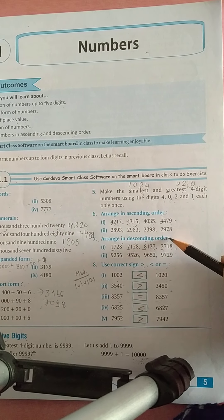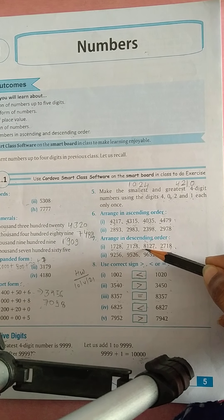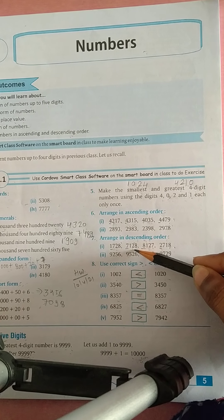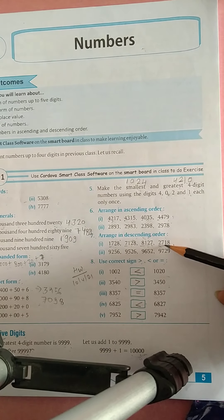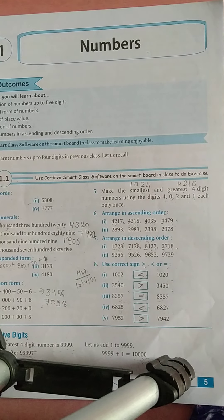Question number 7, arrange in descending order. So descending में numbers को biggest to smallest arrangement बराना है. So biggest number is 8,127. Then 7,128. Then 2,718. And then 1,728.